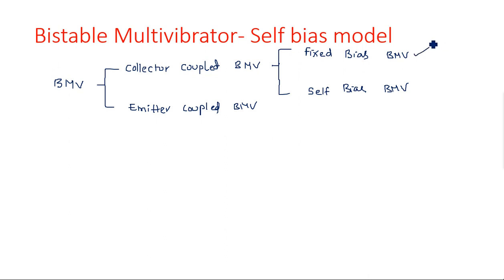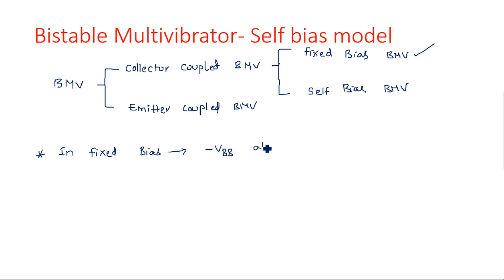In the fixed bias bistable multivibrator, we have seen the circuit diagram, operation, and how to choose the values of individual elements. Coming to self-bias, the major difference between fixed bias and self-bias is that in fixed bias, we give an additional supply like minus VBB at the base of both transistors Q1 and Q2. This additional supply brings the transistor to a particular biasing condition.